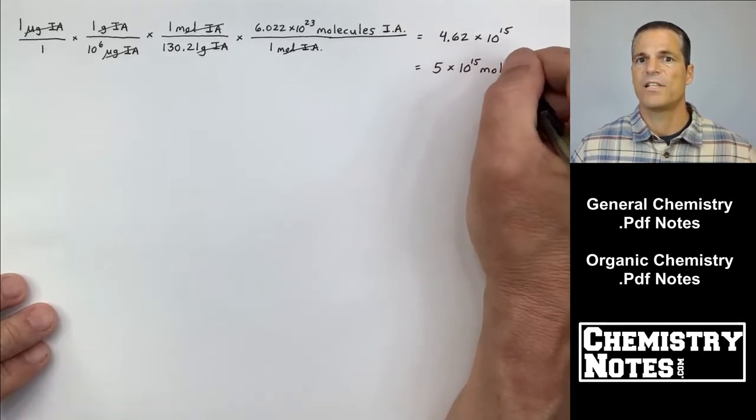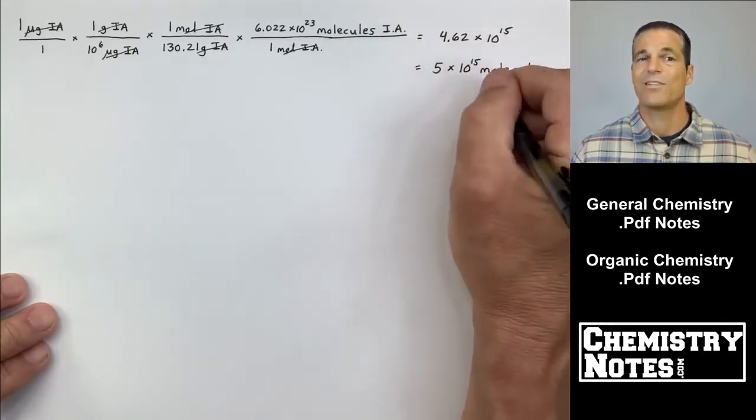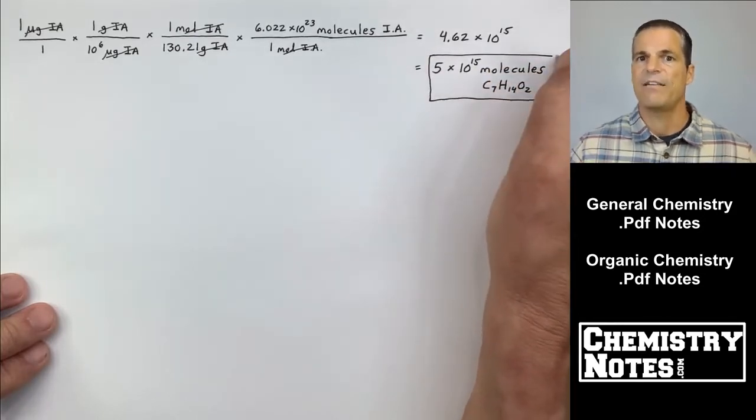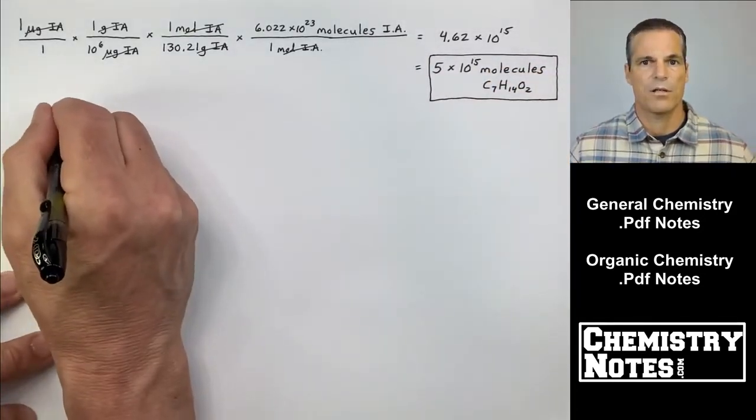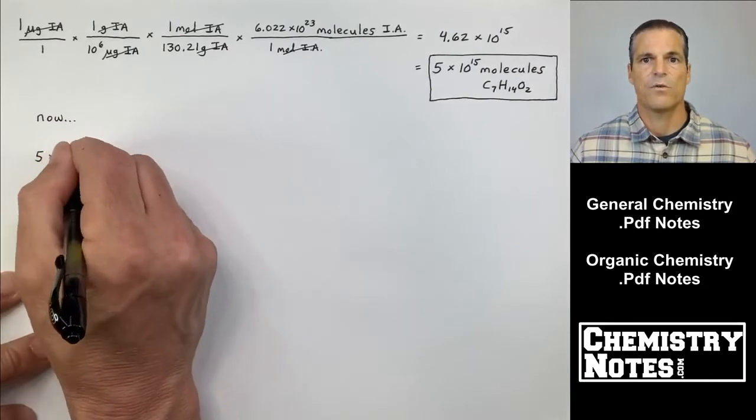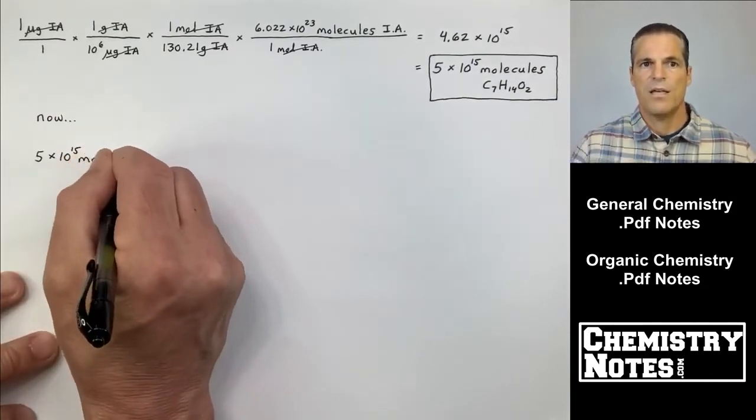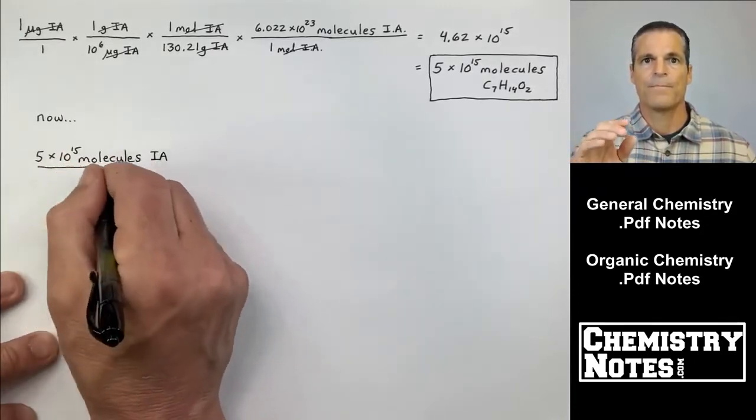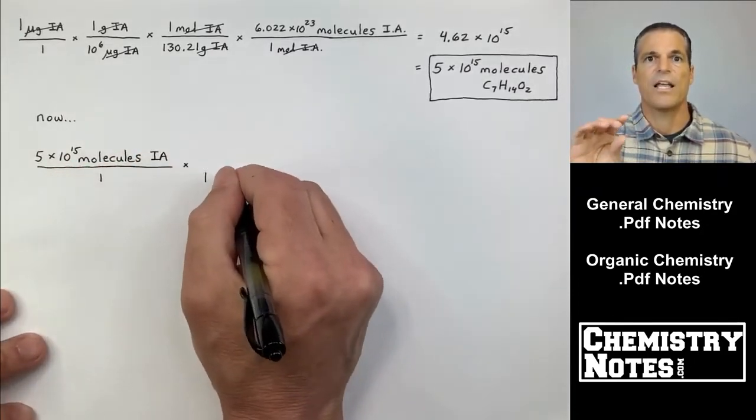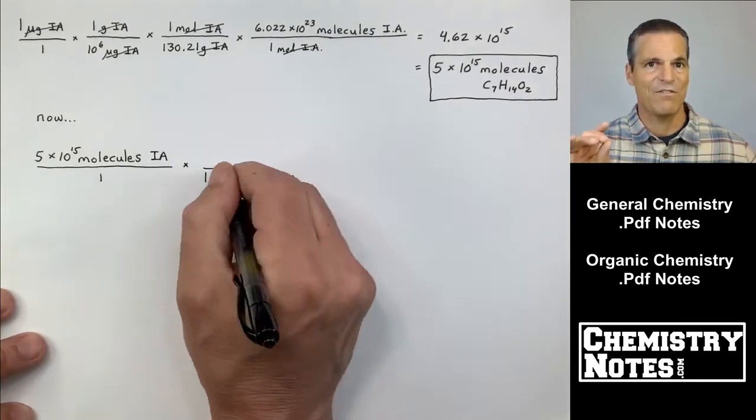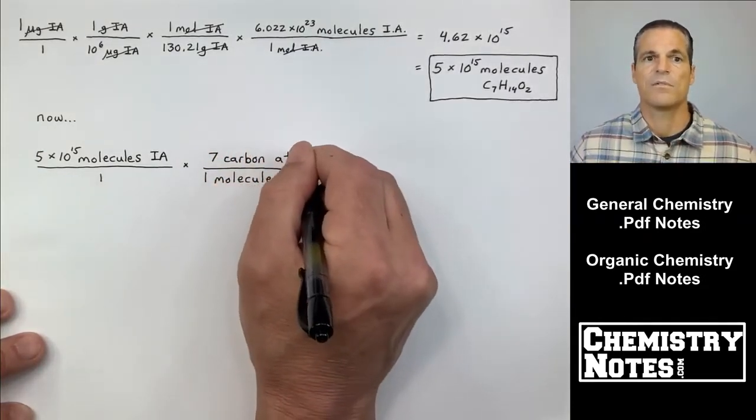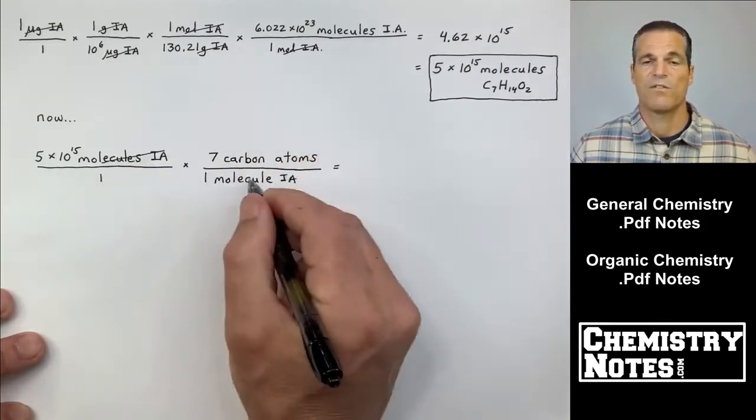4.62 times 10 to the 15th. We started with one sig fig, which limits the way we can report our answer: five times 10 to the 15th molecules of C7H14O2. Okay, everything from the beginning to the end, when we get our answer, is a conversion factor, and we assume conversion factors have an infinite number of significant figures. That's why I always say the number of sig figs we start with is the number of sig figs we end up with.